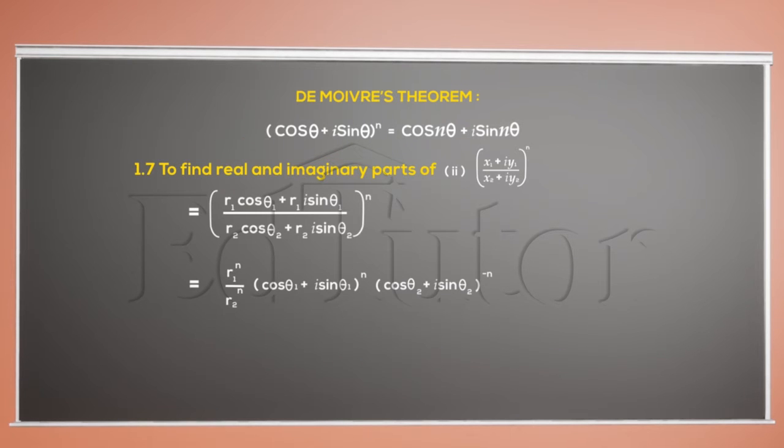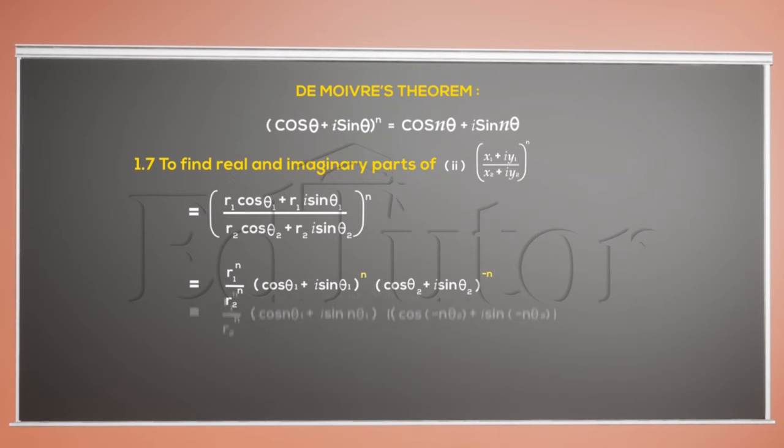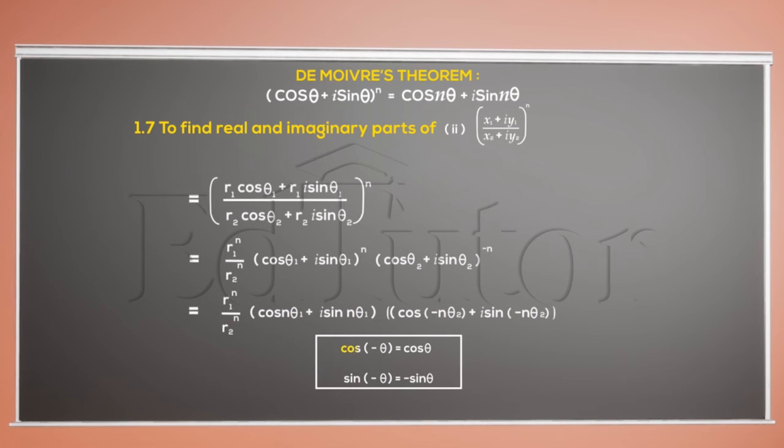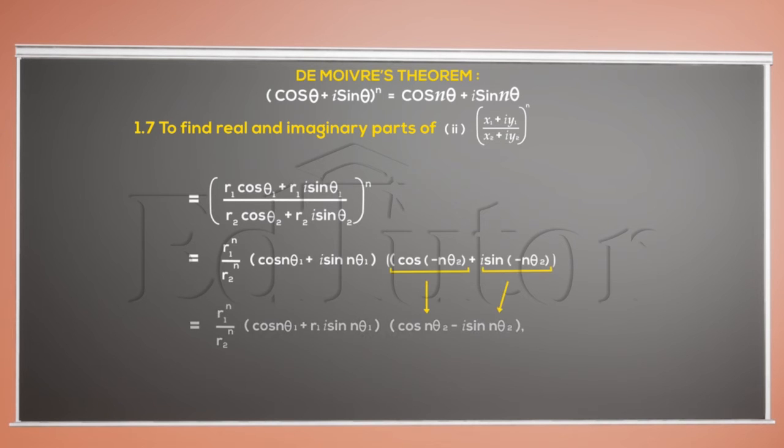Now, it's time to apply the de Moivre's theorem on both the brackets, according to which the power gets removed and becomes product with theta. Note that cos of minus theta equals cos theta and sin of minus theta equals minus sin theta. Apply that here and the equation will look like this.